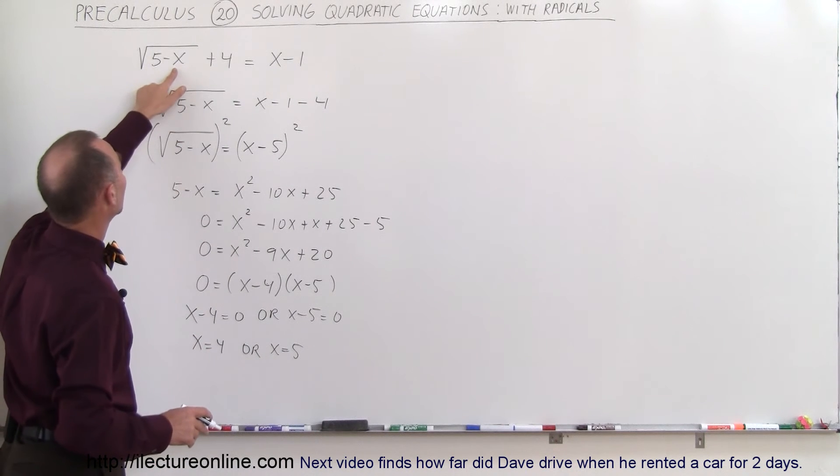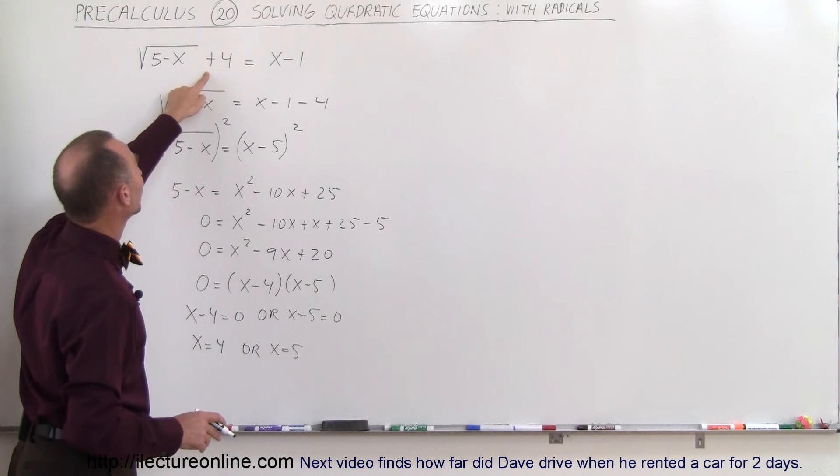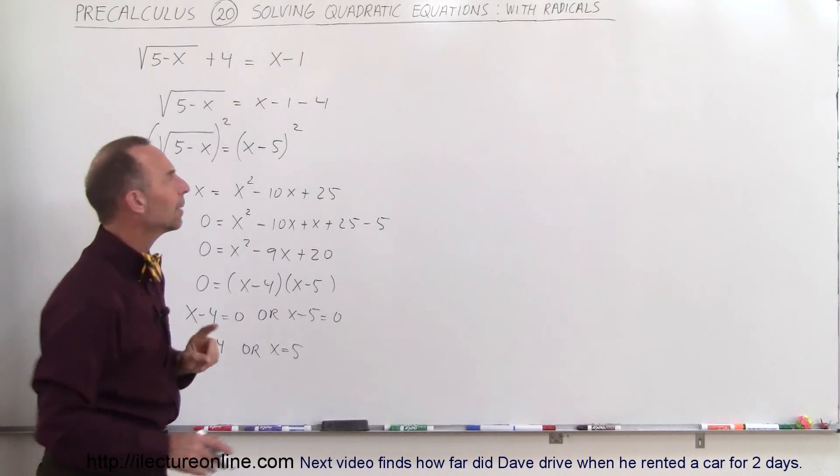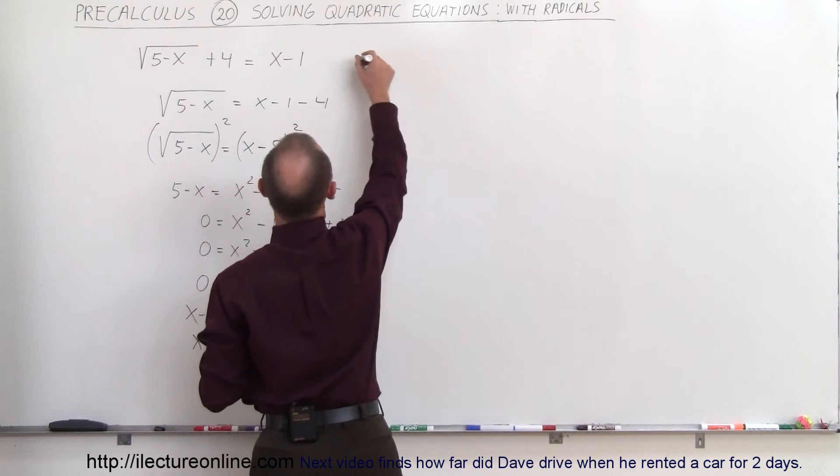we get 5 minus 4, that is 1. So the square root of 1 plus 4 is 5, and 4 minus 1 is, wow, that may not be the same thing. So let's try that. Let's do that again.